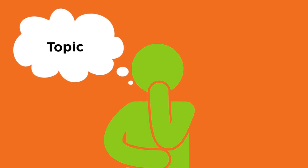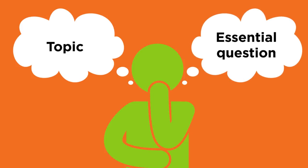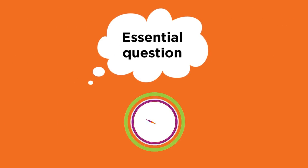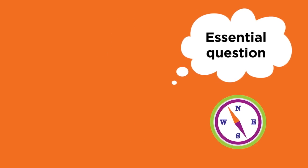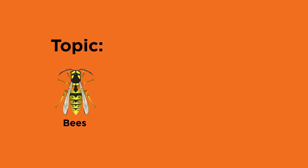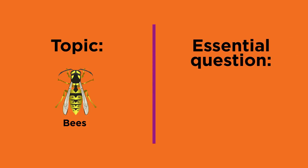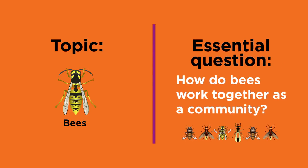You probably already have a topic for your research project and maybe even an essential question that you are thinking about. The essential question is what guides your research and it has more than one answer. We will explore the topic of bees in this video. Your essential question is: how do bees work together as a community? Let's get started.